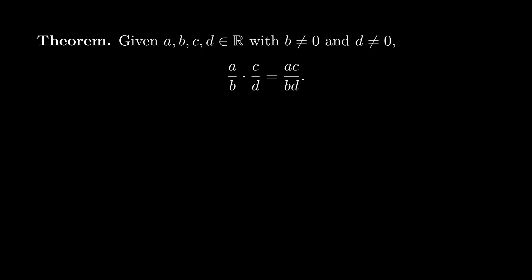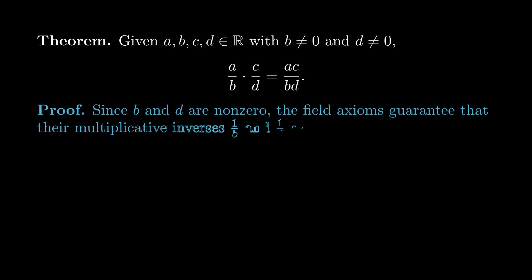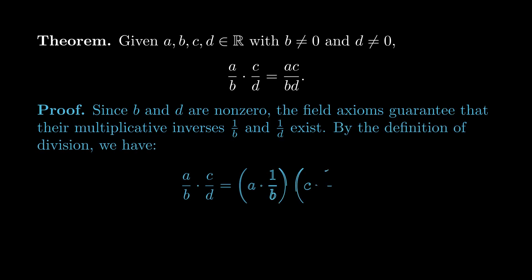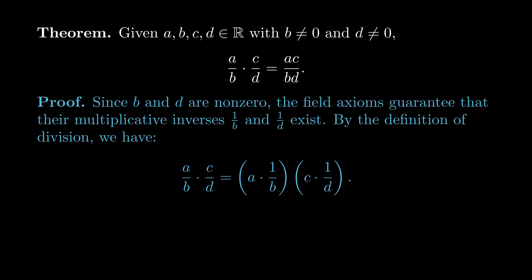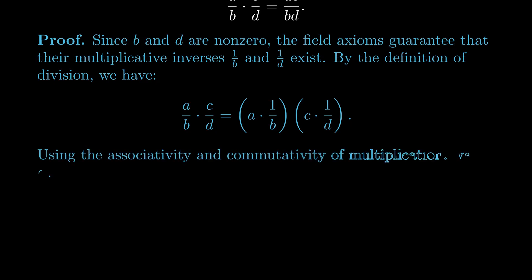We'll start by using the hypothesis that the denominators are not 0. Since b and d are non-zero, the field axioms guarantee that their multiplicative inverses, 1/b and 1/d, exist. Let's now rewrite the symbols on the left-hand side using their definition. By the definition of division, we can rewrite a/b as a × (1/b), and we can rewrite c/d similarly.